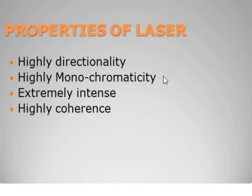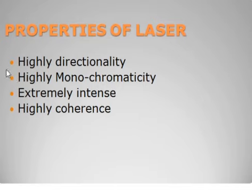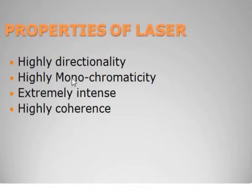The next property is high monochromaticity. Monochromaticity refers to the property of any source describing how pure in color it is, or in other words, how narrow its frequency bandwidth or wavelength bandwidth is. The laser source contains only one specific wavelength of light, whereas ordinary sources emit radiation having a large band of frequency or wavelength.